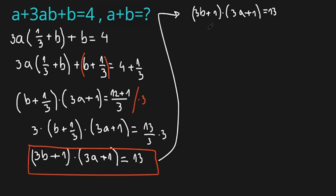So we have (3b + 1)(3a + 1) = 13. As you should know, 13 is a prime number. This means the product of two integers can only be 1 × 13 or 13 × 1. But we also need to consider the negatives, since we are looking for all integers, not just positive integers.